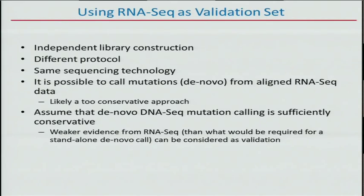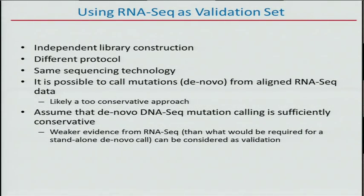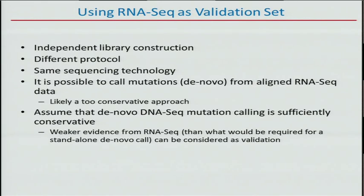We need a lot of validation data to compare those tools, and our proposal is to use RNA-seq as a validation set. It's not completely orthogonal, but it uses independent library construction and a different protocol. One conservative approach is de novo calling in RNA-seq, but that's probably overkill here. Since we've already made conservative calls from DNA sequencing, we can ask: what's the probability of making a mistake in RNA-seq at just that specific location? We have a prior. In principle, we can set a much lower threshold — if we observe any evidence for an event in RNA-seq, we can call the original call validated.